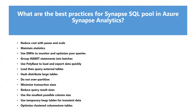Use PolyBase to load and export data quickly. Choose the right distribution: for large fact tables with many joins, use hash distribution; for staging tables use round robin; for tables under 200 GB use replicated distribution. Also, do not over-partition, minimize transaction sizes, reduce query result sizes, and for complex queries try to break them into smaller queries. Use the smallest possible column size, and use temporary tables for transient data.